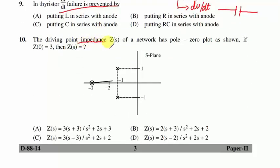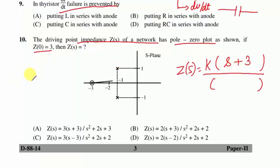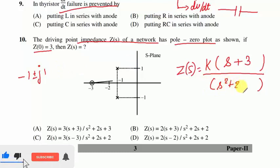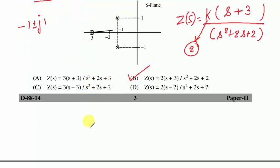Question 10: the driving point impedance Z(s) has a pole-zero plot; if Z(0)=3, find Z(s). Z(s) = k × (s+3) / (s²+2s+2). The zero is at s=−3 and poles are at s=−1±j1. With k=2, option B is correct.